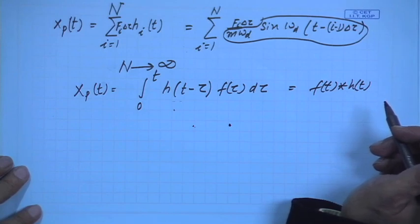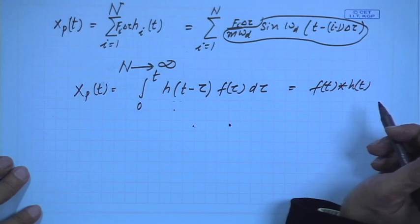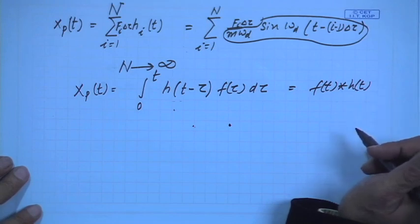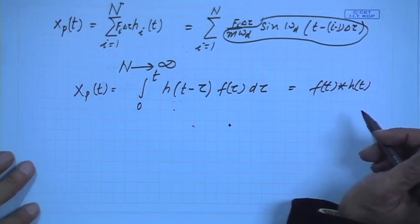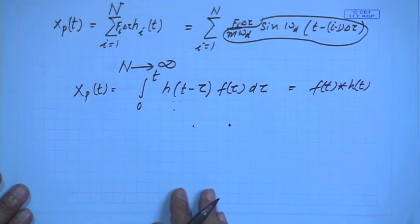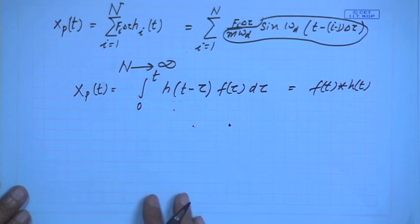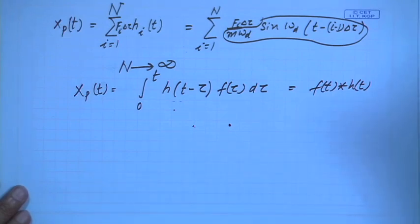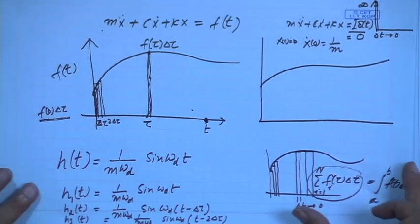It is a very, very important concept — both in flutter and aerodynamics calculations and in structural dynamics. In control theory, it also appears, and there it goes under the name of the state transition matrix, because you are dealing with more than one degree of freedom. That is one way of doing it, and you can show they are related to each other.